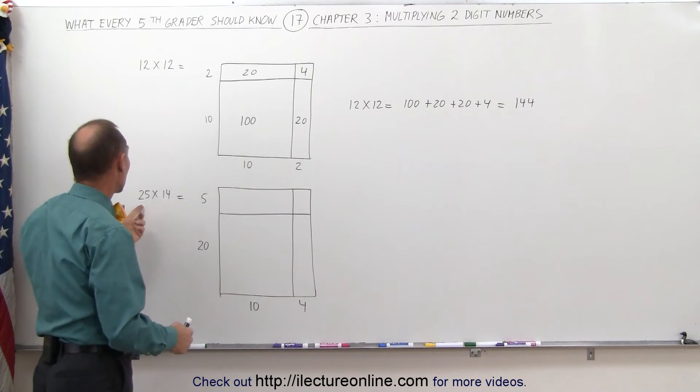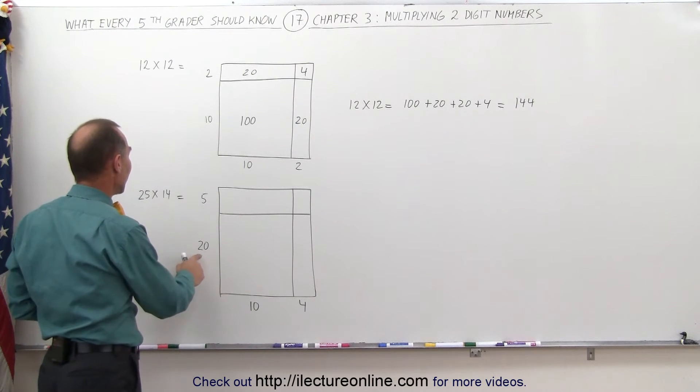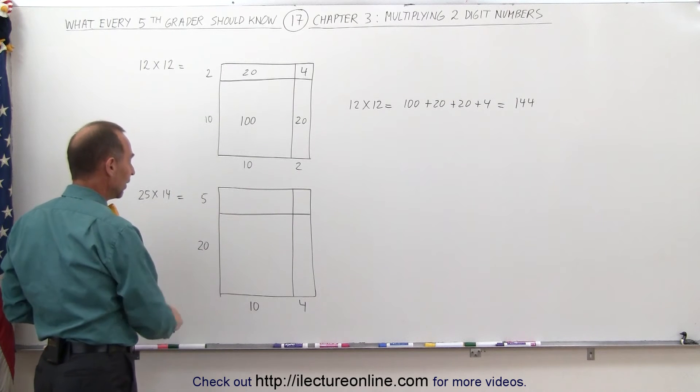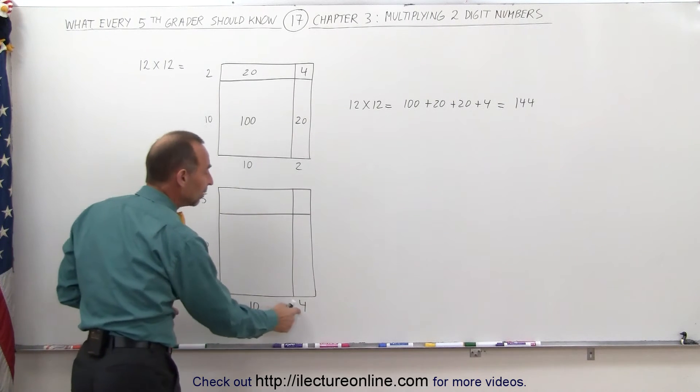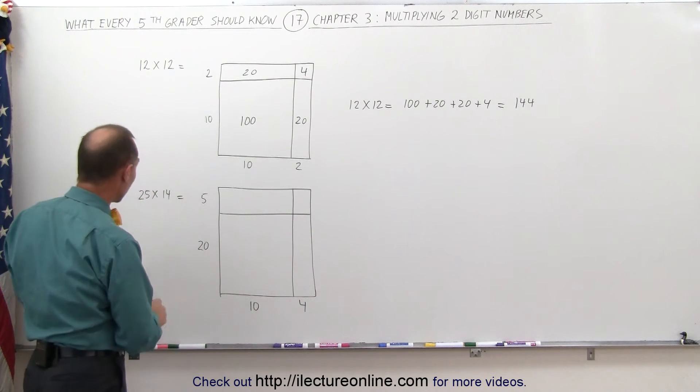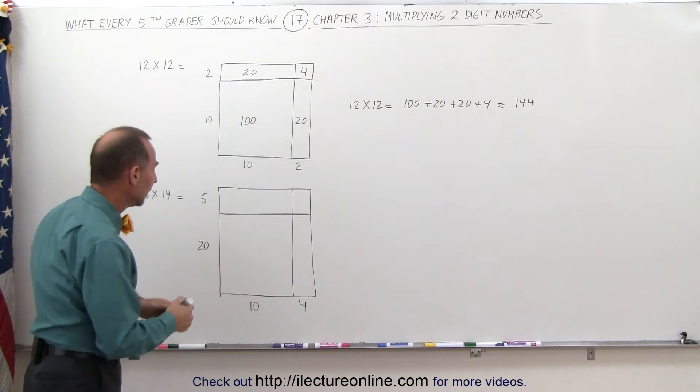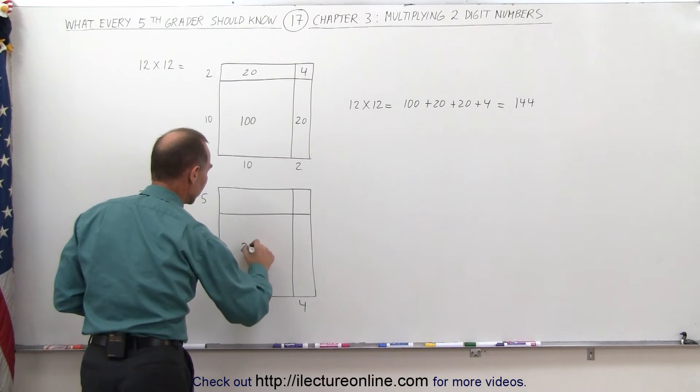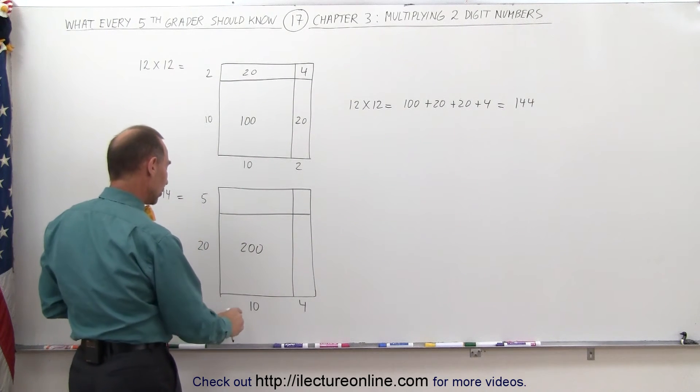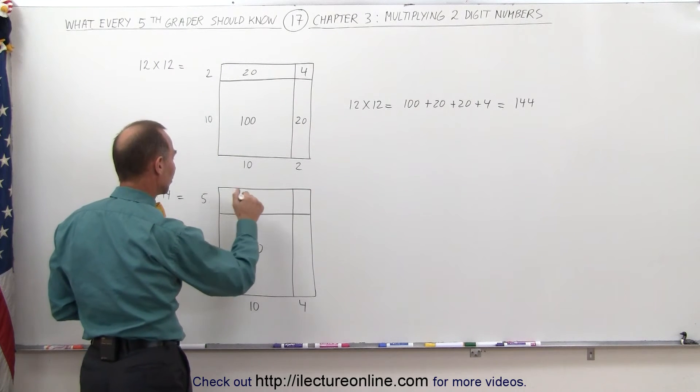Let's try the numbers 25 and 14. 25 can be written as 20 and 5. 14 can be written as 10 and 4. So here I'm multiplying the 20 times the 10, that gives me 200. Here I'm going to multiply the 10 times the 5, which gives me 50.